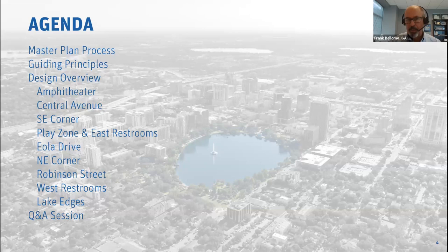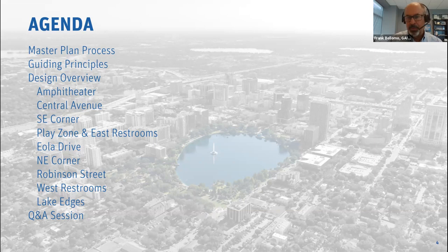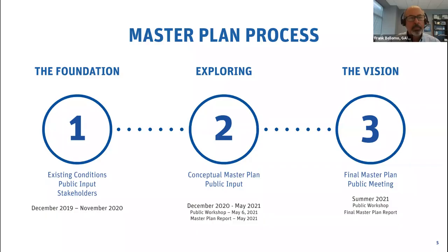Our agenda for today: I'm going to talk about our process so you know where we've been and where we're headed. Then I'll turn it over to Donald. He's going to talk about the guiding principles of the overall design of the master plan, then get into the details of the design overview. We'll have a number of enlargements of the plan so you can see more detail, and then we'll have a Q&A session at the end.